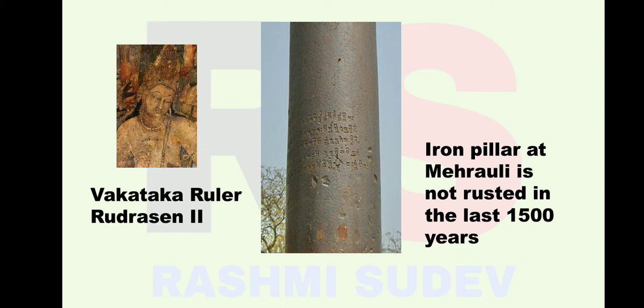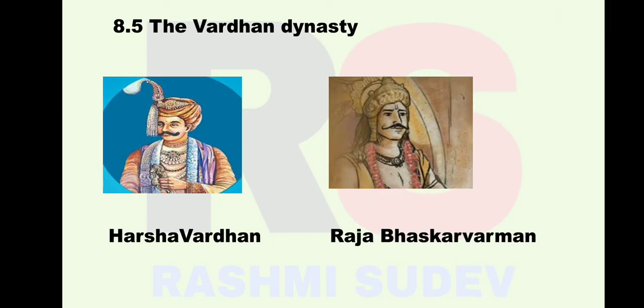During the Gupta Dynasty, a Chinese Buddhist monk named Fa Hien came to India. He wrote much information about India in his writings, stating that the Gupta emperor had an efficient administration system.